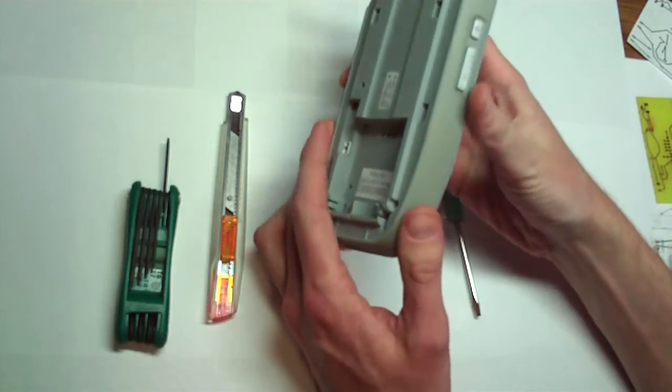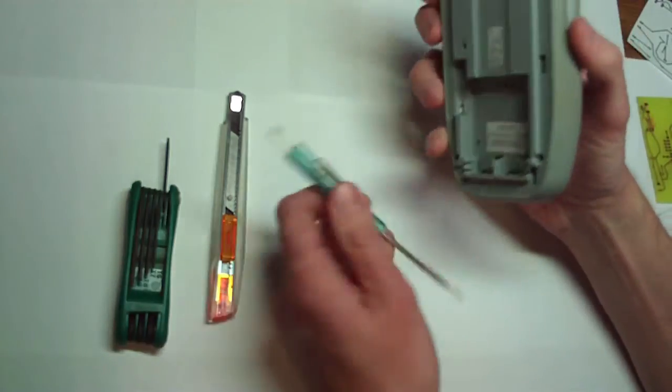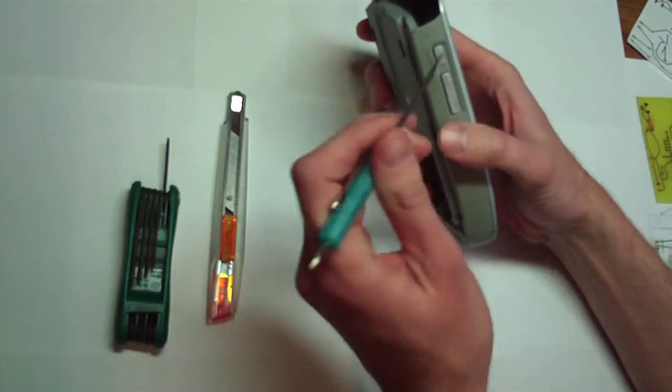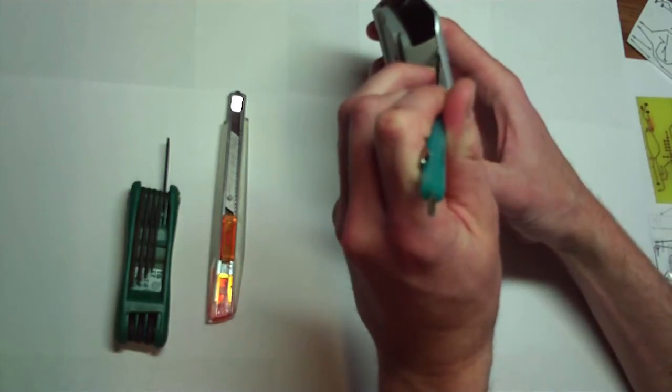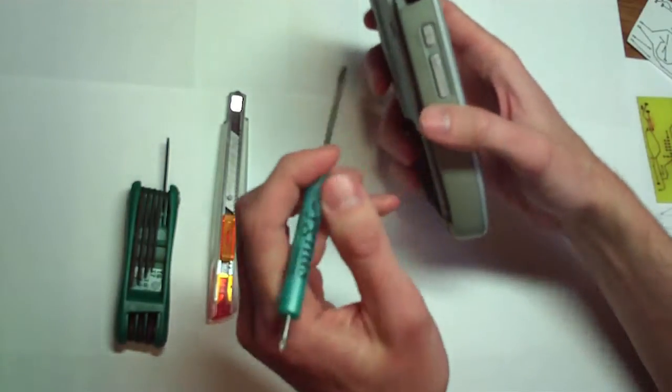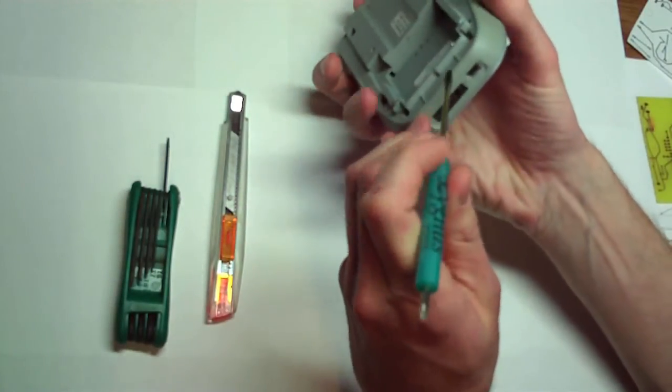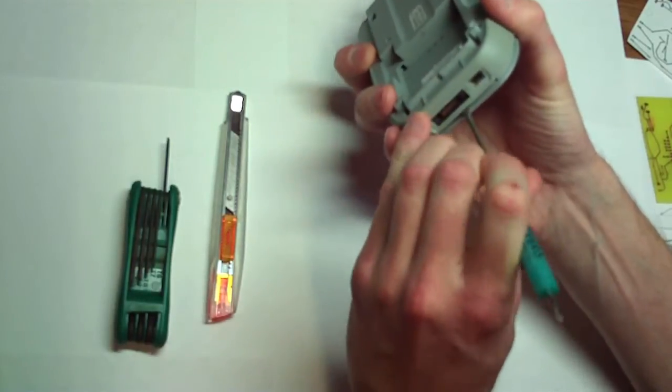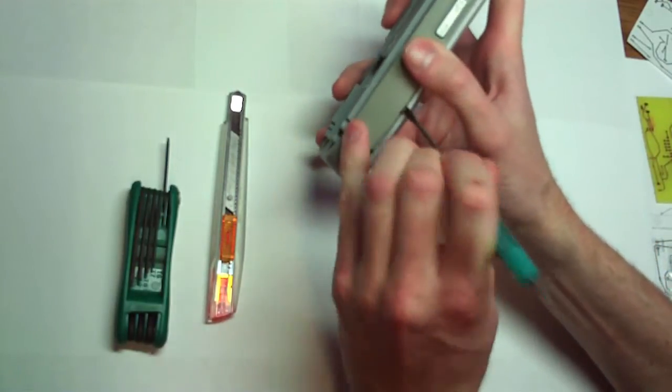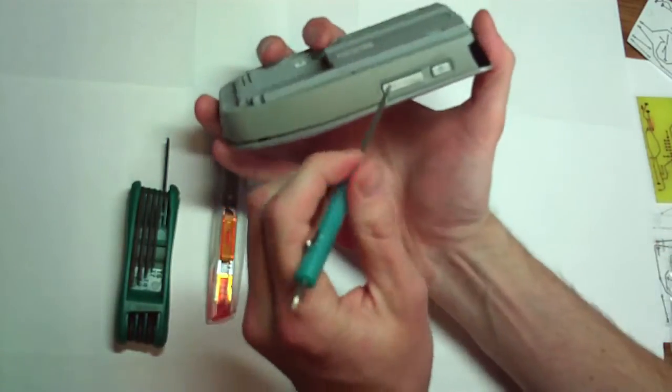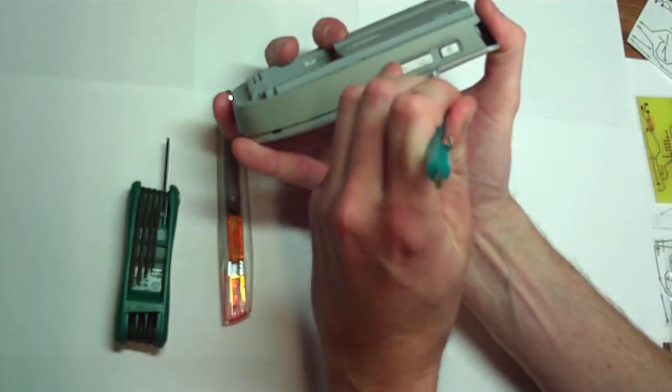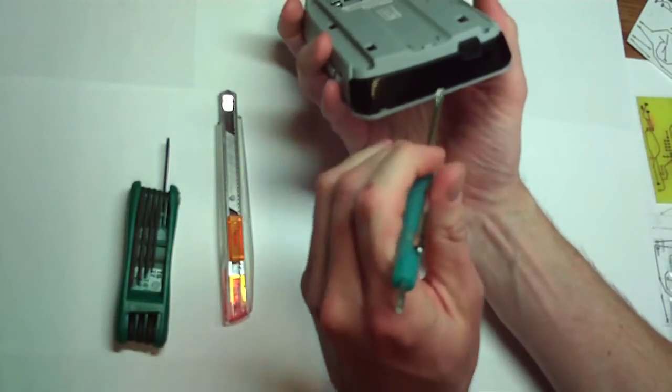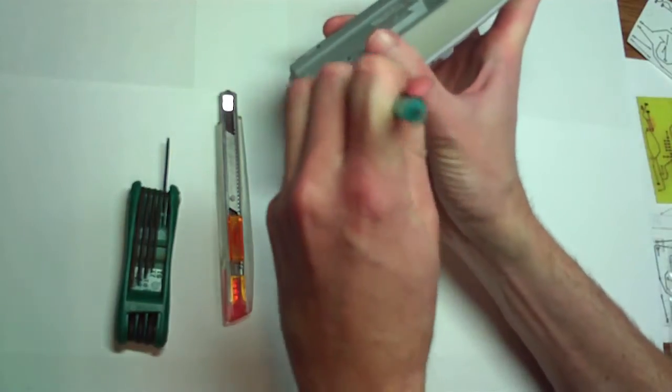Now we can start to pry this thing apart. You want to be really careful with this, and it would probably be even better if you had something thin and plastic instead of metal, because when you do this it will slightly mess up the plastic. So just be careful, go slow, take your time. You don't want to damage the plastic too much. You see how it's starting to pop out there? So if you kind of work your way around, it should eventually come all apart. So let's try to go slow and pry this thing apart. Make sure you're holding the remote really well because you don't want to drop it, of course.